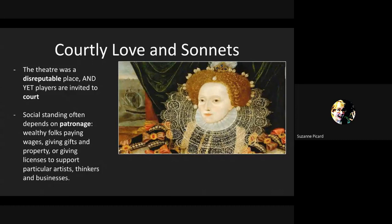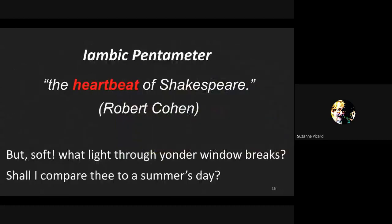Iambic pentameter was the structure that showed you were educated and knew what you were doing. This is the heartbeat of Shakespeare. The lines have the rhythm we'd expect of a heartbeat: da-dum, da-dum, da-dum, da-dum, da-dum. The softer beat comes first and the heavier beat comes second. It kind of sounds like Dr. Seuss — 'I do not like green eggs and ham, I do not like them, Sam I am.'